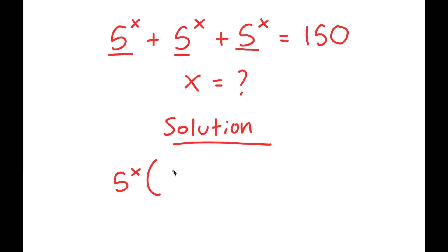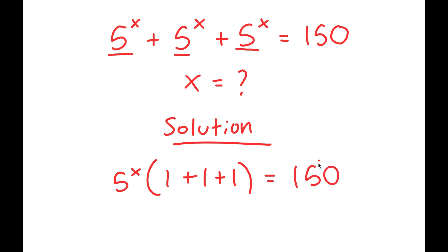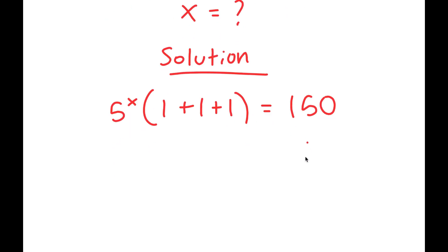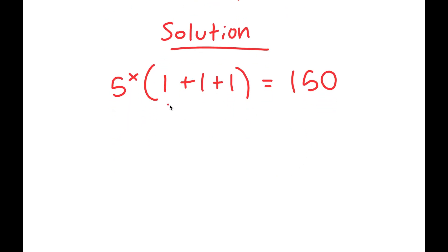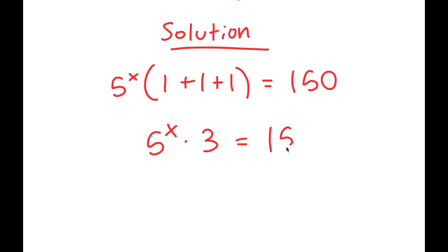So I get 5 to the power of x times 1 plus 1 plus 1 is equal to 150. Now I'm going to solve what's in the parentheses — 1 plus 1 plus 1 is 3 — so I get 5 to the power of x times 3 is equal to 150.